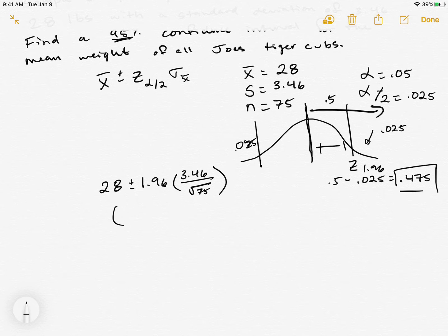The lower end is going to be 27.22, we'll just go two digits, and then if we switch the subtraction to addition we get 28.78.